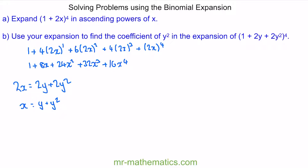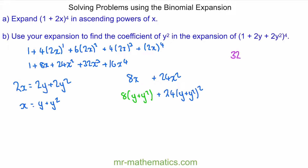We can substitute x = y + y² into our expansion to find the coefficient of y squared. There's no constant x term to substitute into, but we can substitute into the 8x term: 8 lots of y plus y squared. Looking at the x squared term, we have 24x squared, substituting gives 24 lots of y plus y squared, all squared. For the x cubed term: 32 lots of y plus y squared, all cubed. Expanding this last term gives a minimum power of y³, so we don't need to go further since we only want the coefficient of y squared.